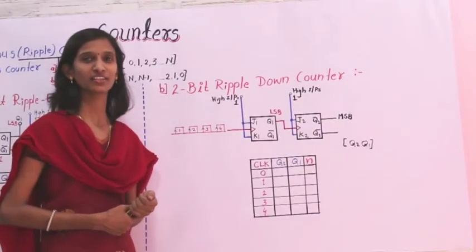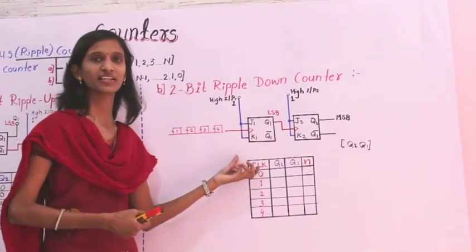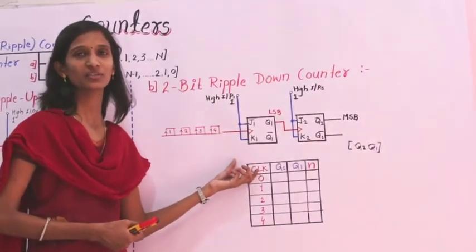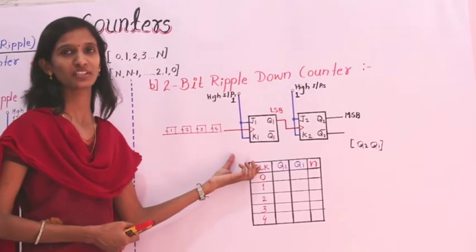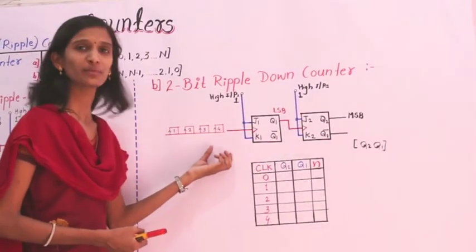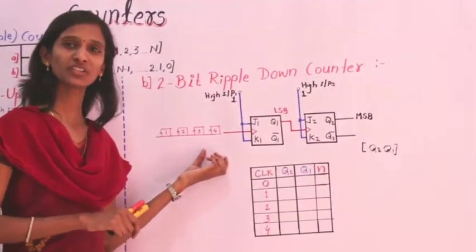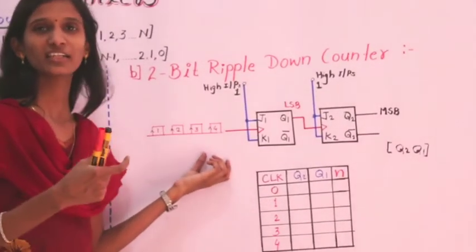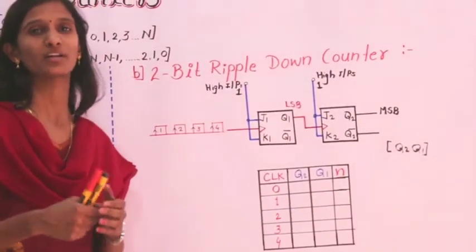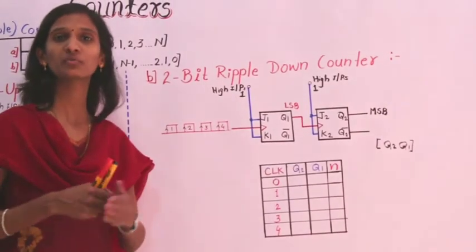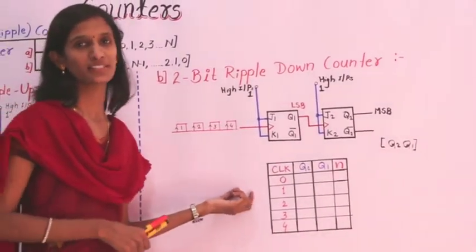The next type of counter is a 2-bit ripple down counter. It is a type of ripple counter, which is asynchronous with different clock pulses given to the system. Down counter means it will count in decreasing order, from higher number to lower number — for example, 4, 3, 2, 1, and 0.